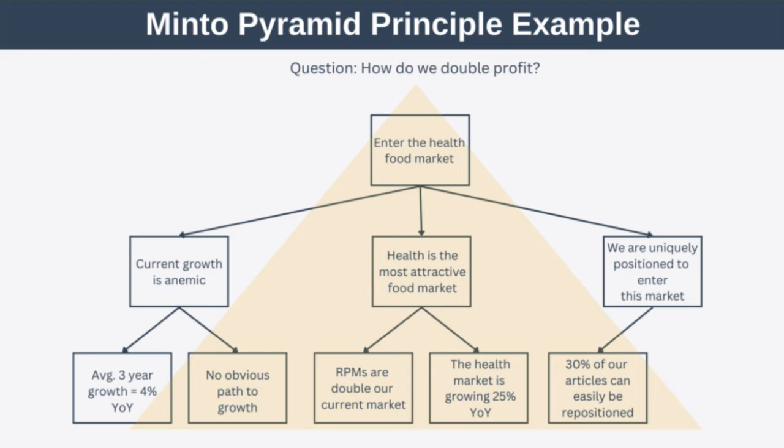Let's map this example into a hierarchy, adding one more level containing the data to back up your insights. As you can see, the hierarchy is effectively a pyramid. On the first two levels we have the answer we wrote before, and on the lowest level we have our supporting facts or supporting data.